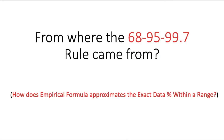We've all heard that the empirical formula approximates the data percentage within a certain range — that's why it's also called the 68-95-99.7 rule or three sigma rule. But have you ever wondered where these exact values come from, or in other words, how does the empirical formula approximate the exact data percentage within a range?